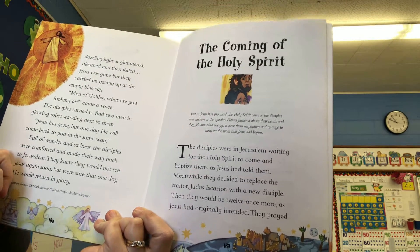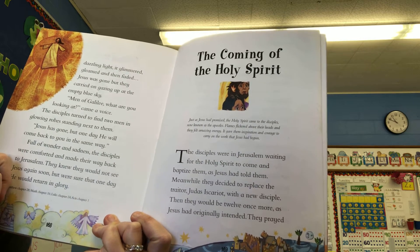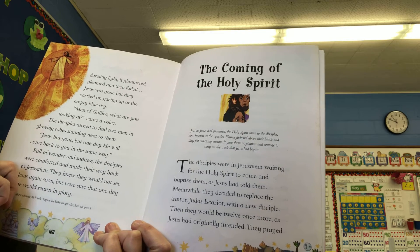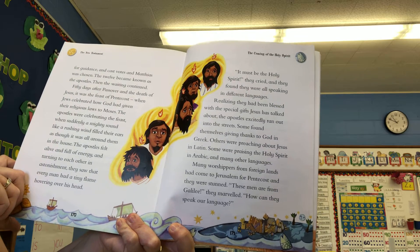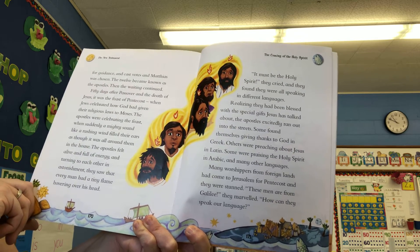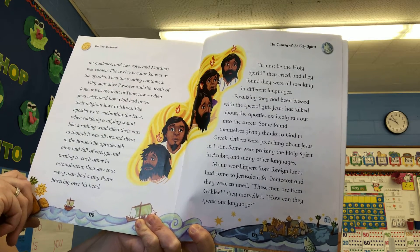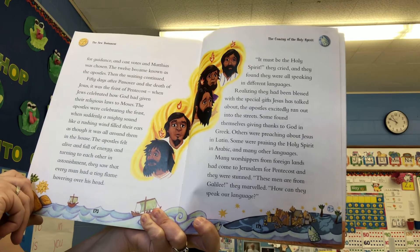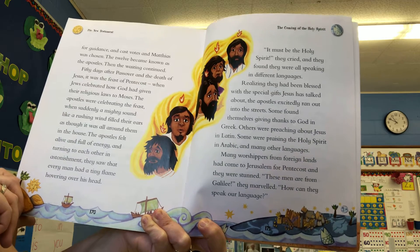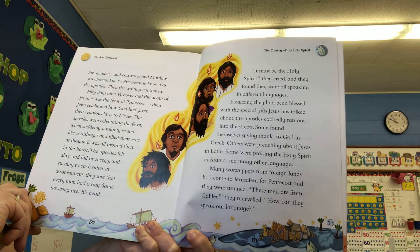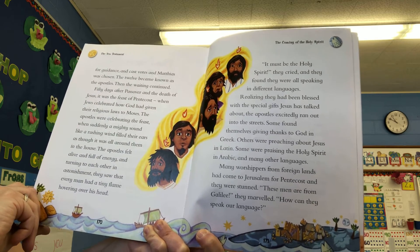Sorry about the bell — of course I'm in class. The disciples were in Jerusalem waiting for the Holy Spirit to come and baptize them as Jesus had told them. Meanwhile, they decided to replace the traitor Judas with a new disciple. Then they would be 12 once more, as Jesus had originally intended. They prayed for guidance and cast votes, and Matthias was chosen. The 12 became known as the apostles. Then the waiting continued. 50 days after Passover and the death of Jesus, it was the feast of Pentecost when the Jews celebrate how God had given their religious laws to Moses. The apostles were celebrating the feast when suddenly a mighty sound like a rushing wind filled their ears as though it was all around them in the house. The apostles felt alive and full of energy, and turning to each other in astonishment, they saw that every man had a tiny flame hovering over his head.